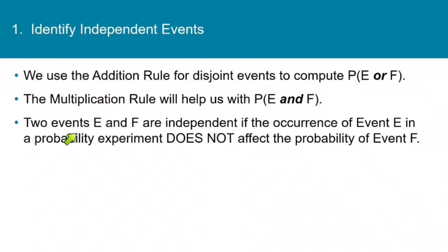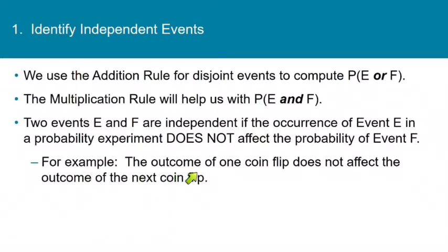Two events, E and F, are independent if the occurrence of event E in a probability experiment does not affect the probability of event F. For example, the outcome of one coin flip does not affect the outcome of the next coin flip. So two coin flips are independent of each other.